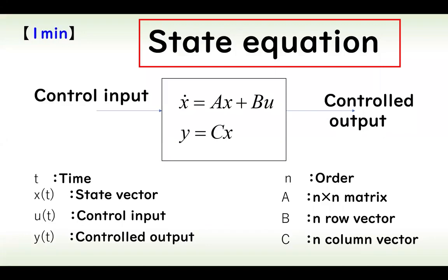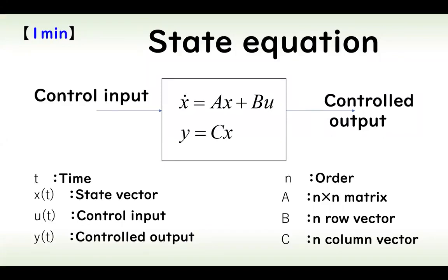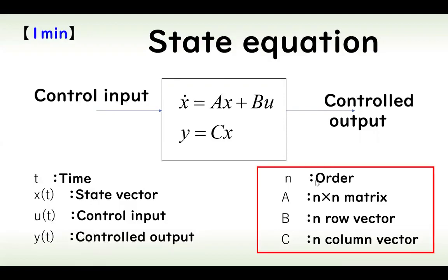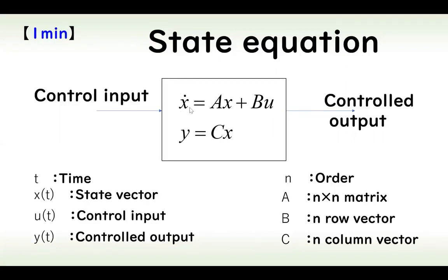State equation takes an important role in control engineering. The form of the state equation uses t for time, x for state, u and y for control input and control output, and n is the order of the system. The equation is given as the time derivative of x equals A times x plus B times u.